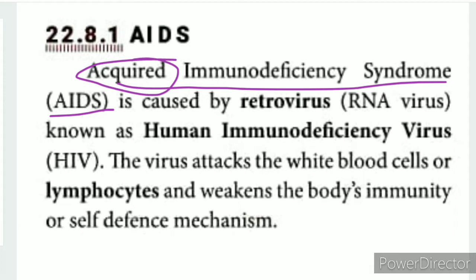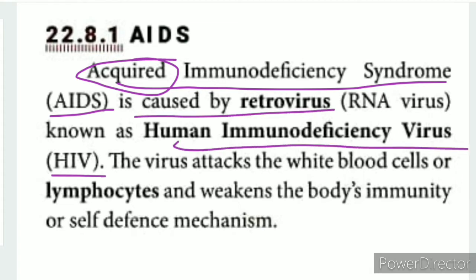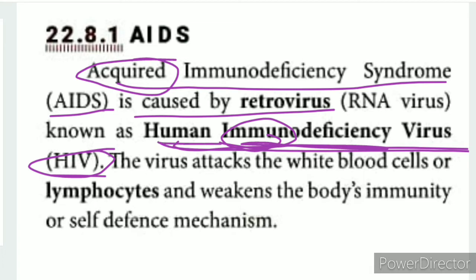Acquired Immuno Deficiency Syndrome (AIDS) is caused by a retrovirus known as Human Immunodeficiency Virus (HIV). HIV causes deficiency in the body's immunity — it reduces the body's disease-fighting capacity, which is why it is named Human Immunodeficiency Virus.